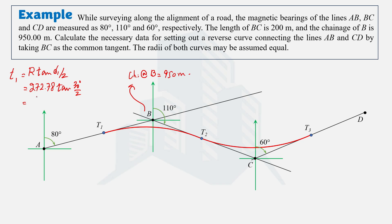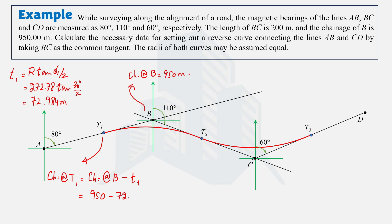Putting in the value of R = 272.38 m and Δ1 = 30°, the tangent length of the first curve is 72.984 meters. Therefore, the chainage at T1 = chainage at B minus tangent length of the first curve = 950 − 72.984 = 877.016 meters.